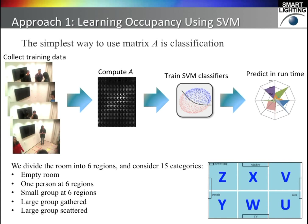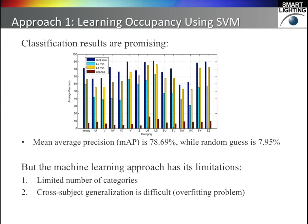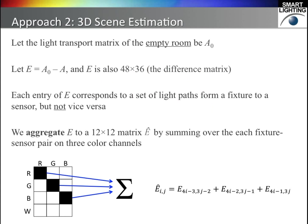Approach 1 is machine learning. We simply use the numbers in matrix A as the features to train support vector machine classifiers. To do this, we have to collect lots of training data and manually label the ground truth. We made 15 categories by dividing the room into 6 regions and placed different numbers of human subjects in the room. The classification results are very promising — we get 78% mean average precision, while random guess is only about 8%. However, this classification method has its limitations. In the real world, there are many categories much more than we can include in the training data, and when we generalize the classifiers to new human subjects, the performance will drop due to overfitting. Machine learning algorithms can also learn some fake patterns from the training data.